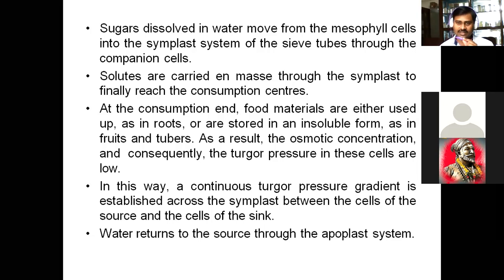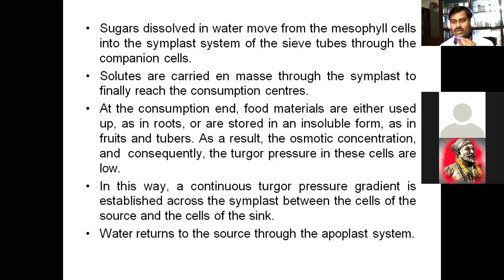From the companion cell, food moves to the sieve tube. Solutes are carried in mass through the symplast process to finally reach the consumption center. At the consumption end, the food material is either used or stored — in the root, or in fruits and tubers. Where there is a need of food, this food material is stored.